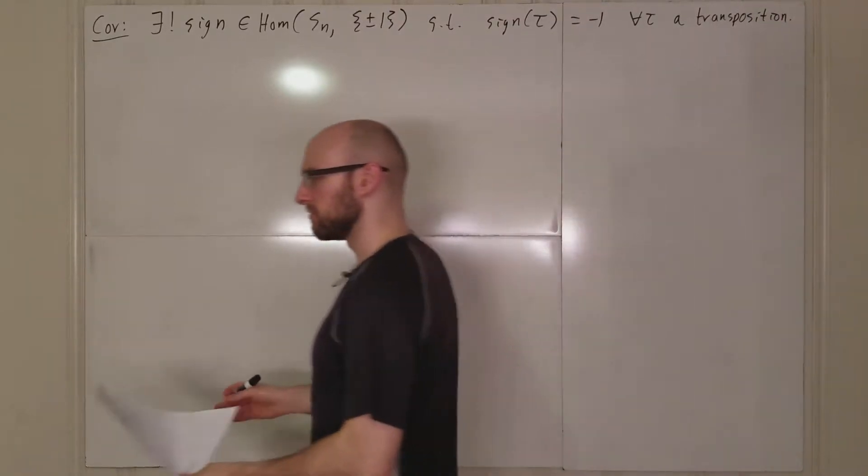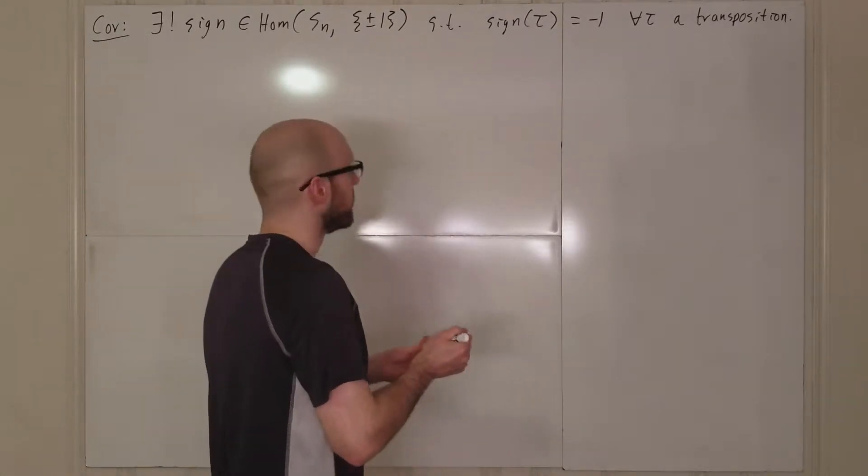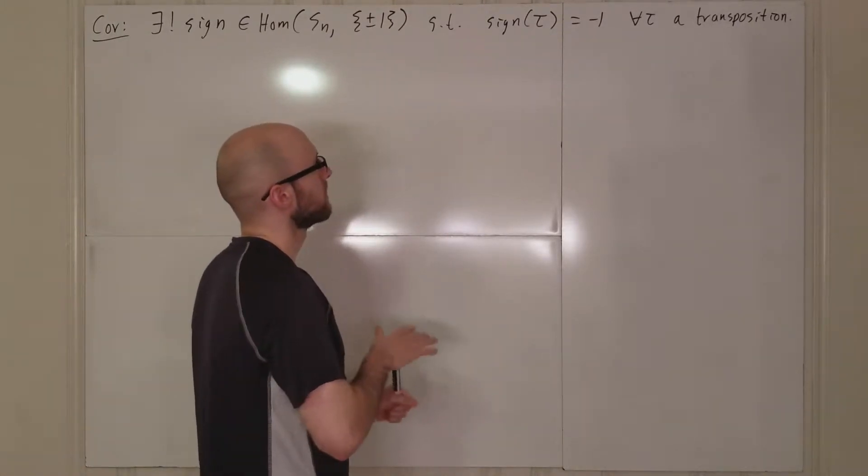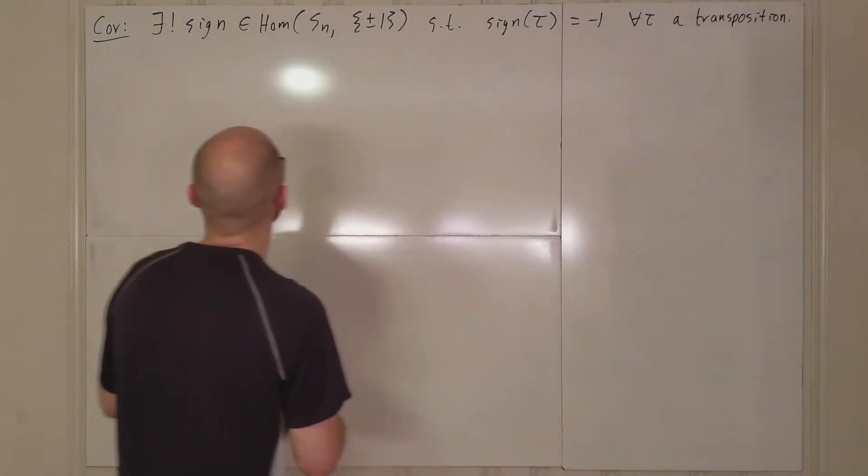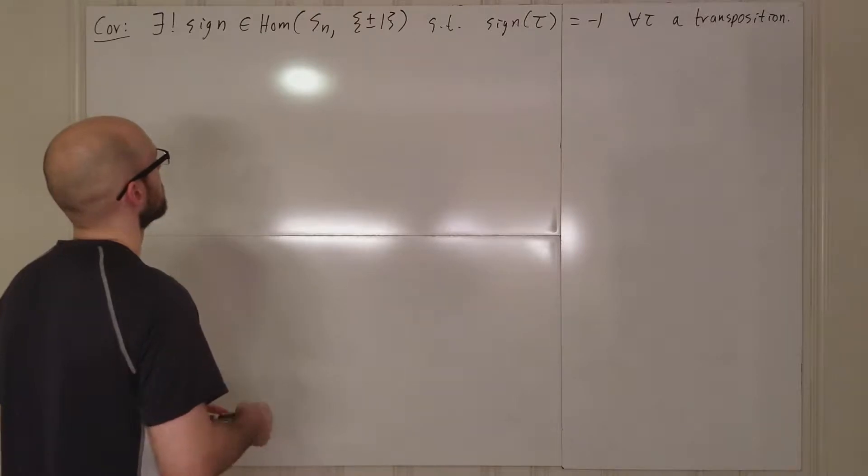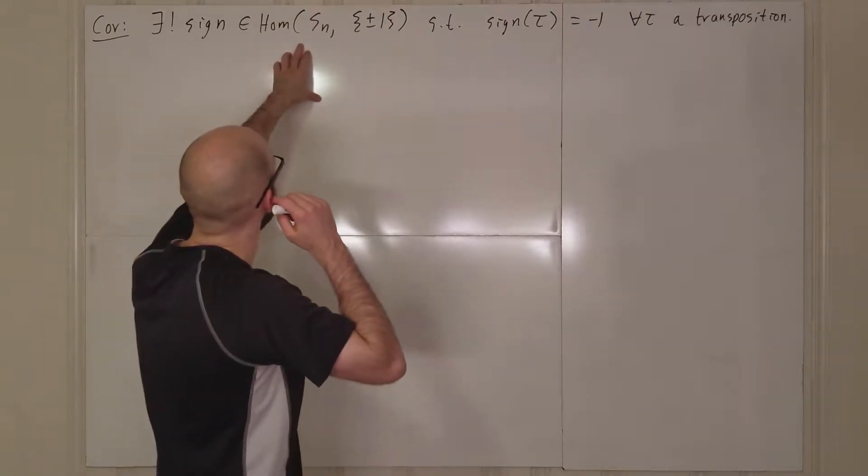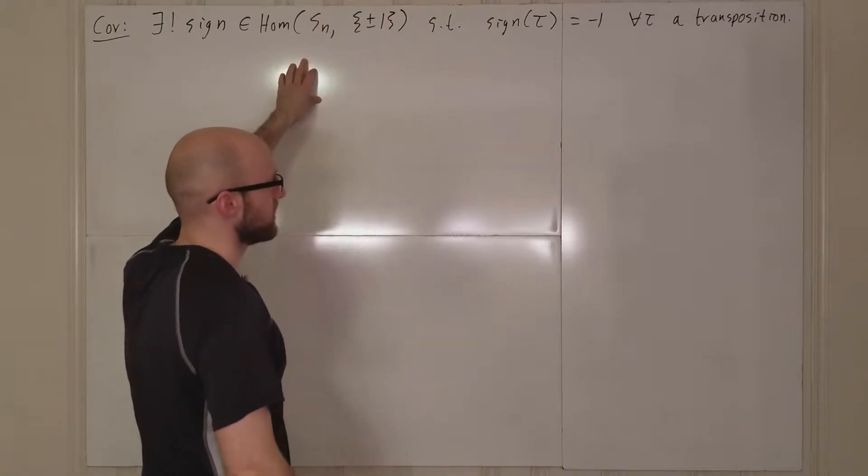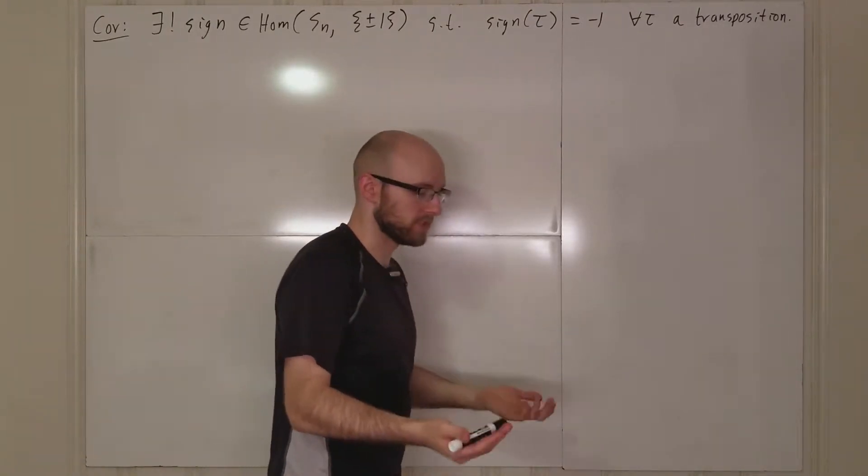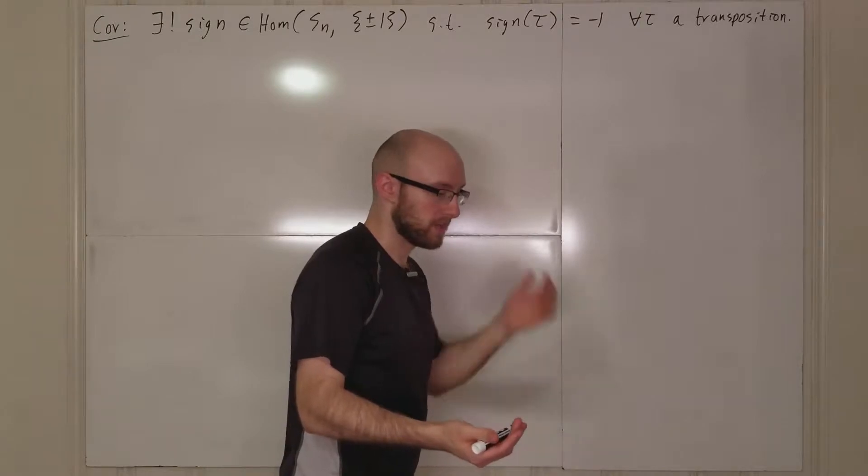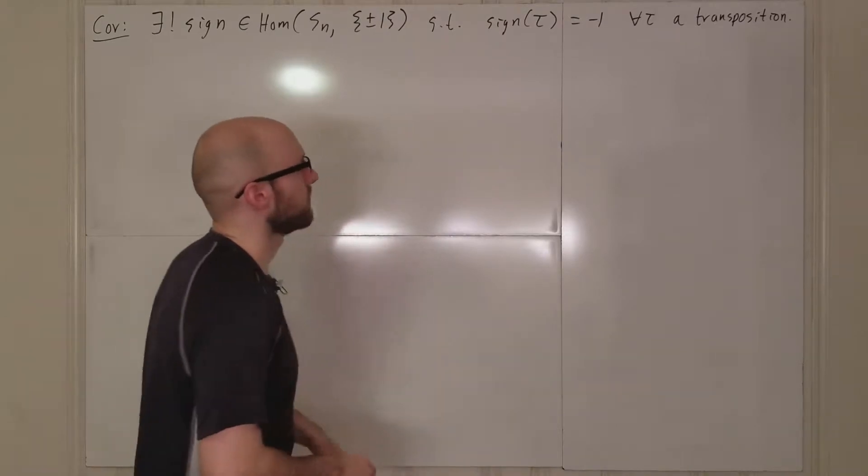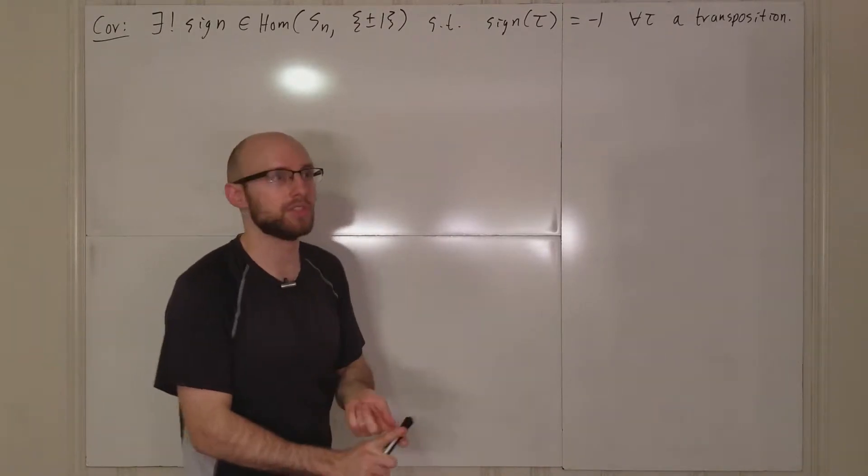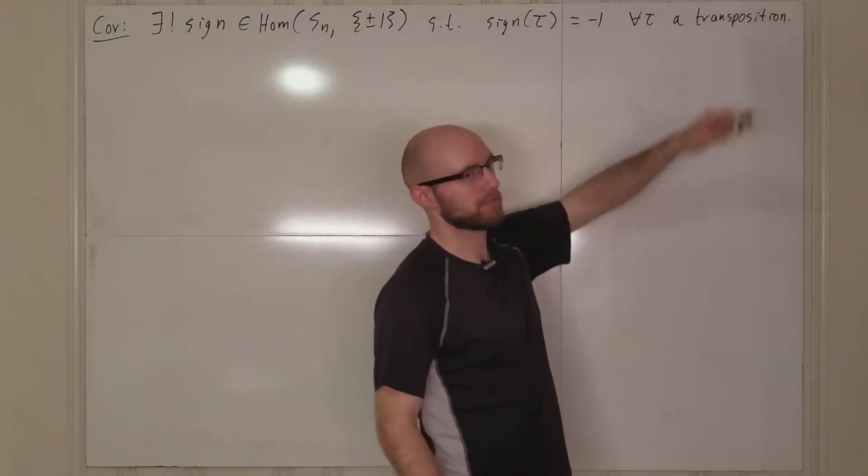So we know that if you take an element, this makes sense because certainly the existence we know. If you take a product of transpositions, then the sign is going to be, if you've got an odd number of transpositions, then it's going to be negative one, because that's by definition.